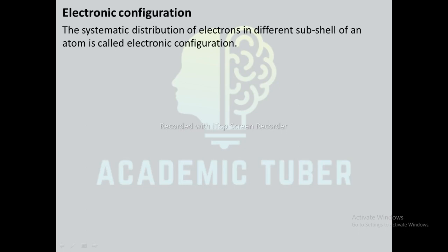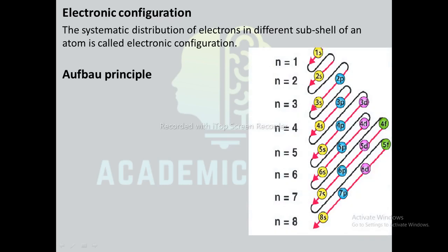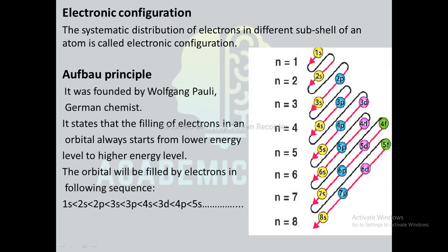Electronic configuration: the systematic distribution of electrons in different shells of an atom is called electronic configuration. It was founded by Wolfgang Pauli and states that the filling of electrons in an orbital always starts from lower energy level to higher energy level. The orbitals are filled by electrons in the following sequence: 1s, 2s, 2p, 3s, 3p, 4s, 3d, 4p, 5s, and so on. A diagram shows the sequence from lower energy level to higher energy level.